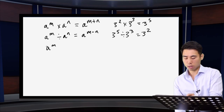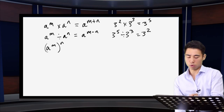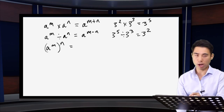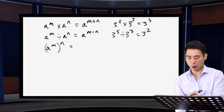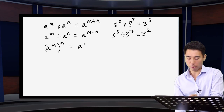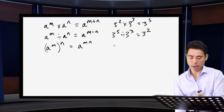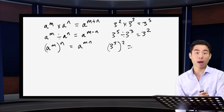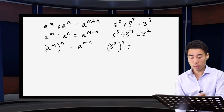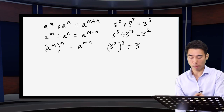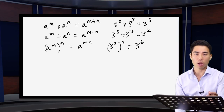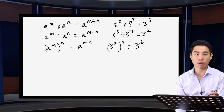Third is the powers of powers rule. If I have something raised to a power, all raised to another power, I simply multiply my powers. So if I have three to the power three, all raised to the power two, I multiply three by two, giving me a single power of six. That covers your basic index laws.